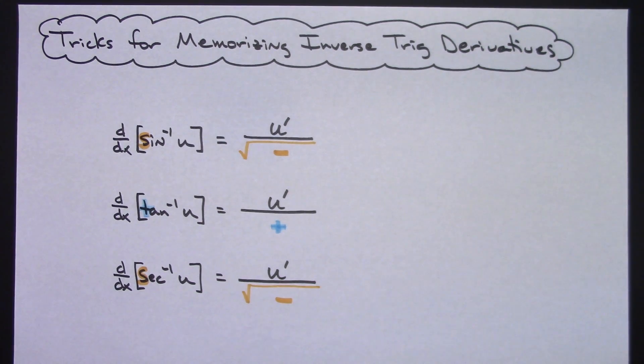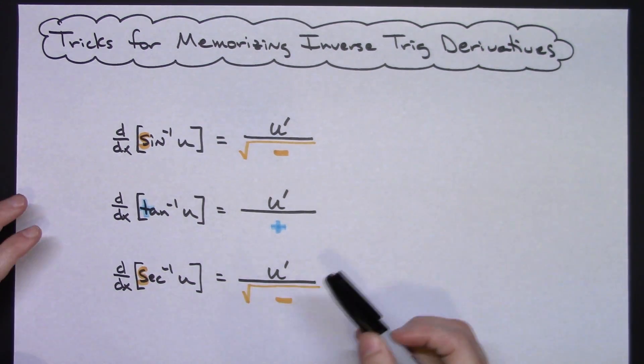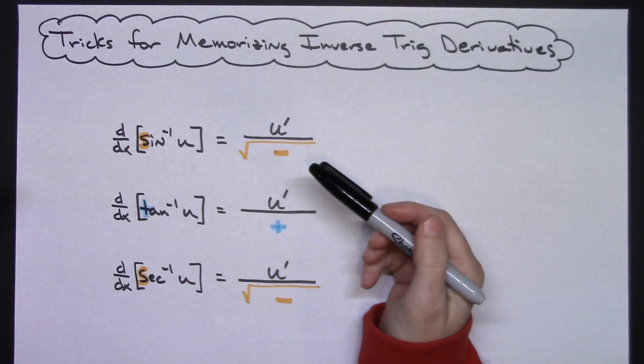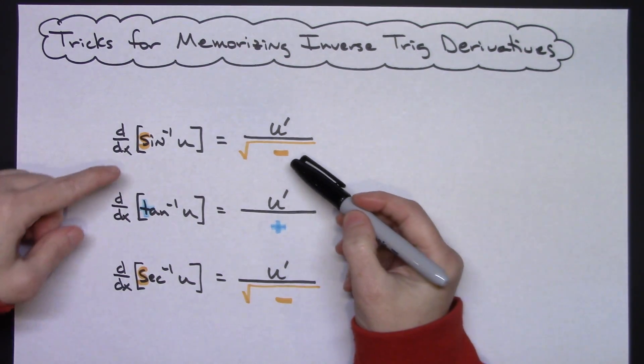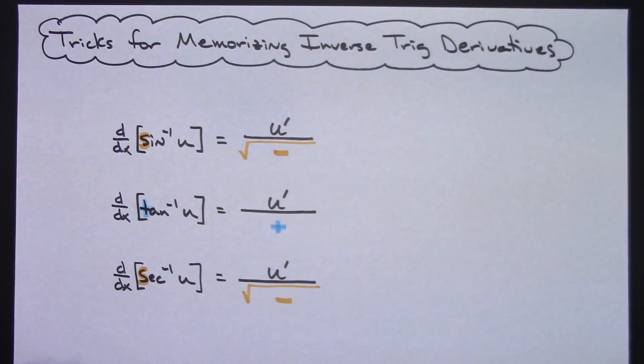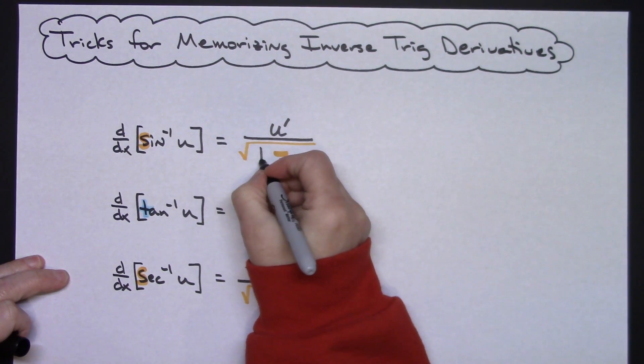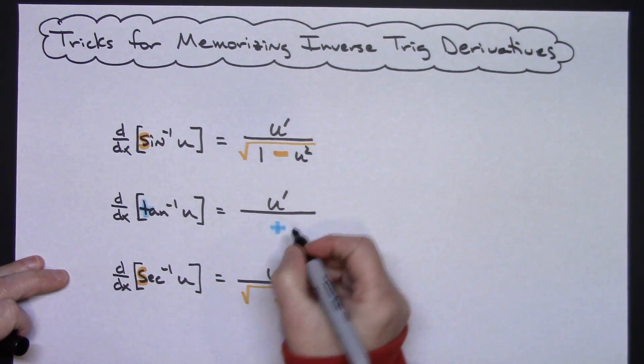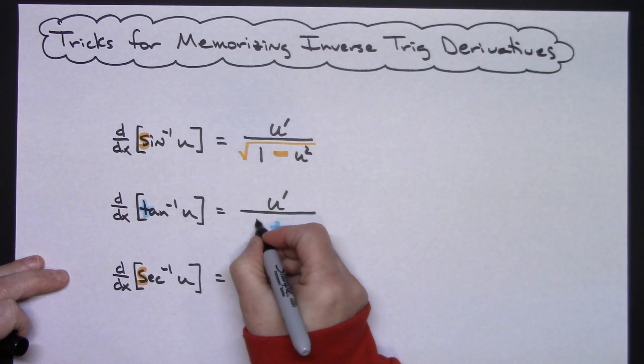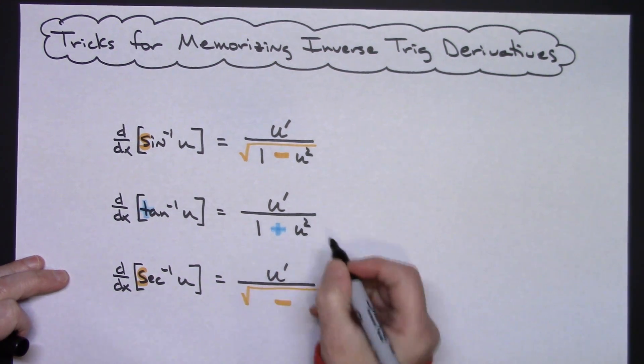Now from this point you just kind of have to memorize what goes in these spots, but you only have two choices. You have a 1 and you have a U squared. The first two are identically the same, so you've got a 1 in the first spot and then a U squared. And then same thing for this: they are in the exact same spot, so a 1 and then a U squared.